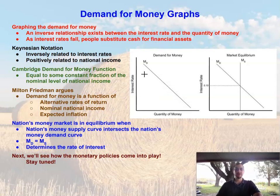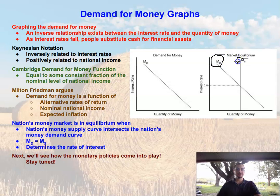Now that we know the demand for money is a function of the interest rate — and that as interest rates rise, the quantity of money demanded falls — let's talk about equilibrium. To find the money market equilibrium, we have the demand for money as well as the money supply, and where those two lines intersect shows us the money market equilibrium.